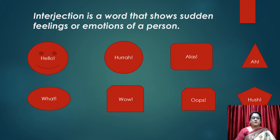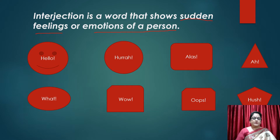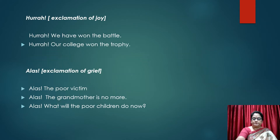What is interjection? Interjection is a word that shows certain emotions or feelings of a person. Words like hello, hurrah, alas, ah, oh, wow, oops, hush — these are used to express feelings. Let's learn their correct uses.